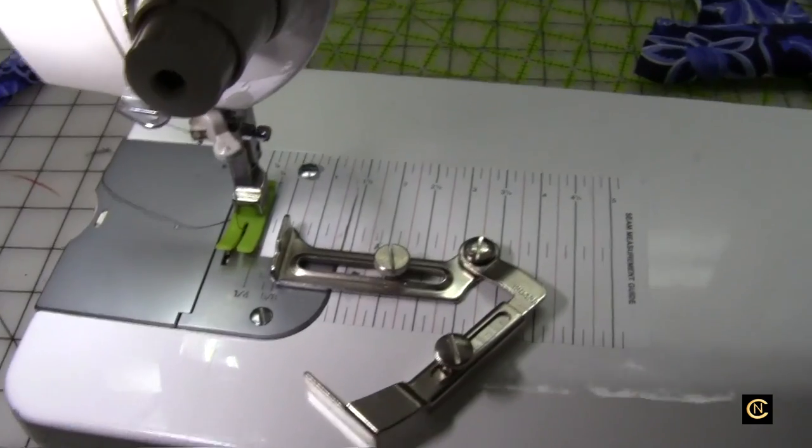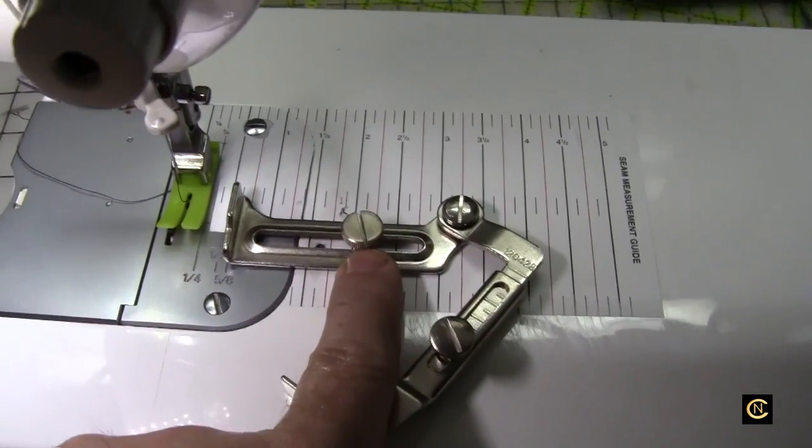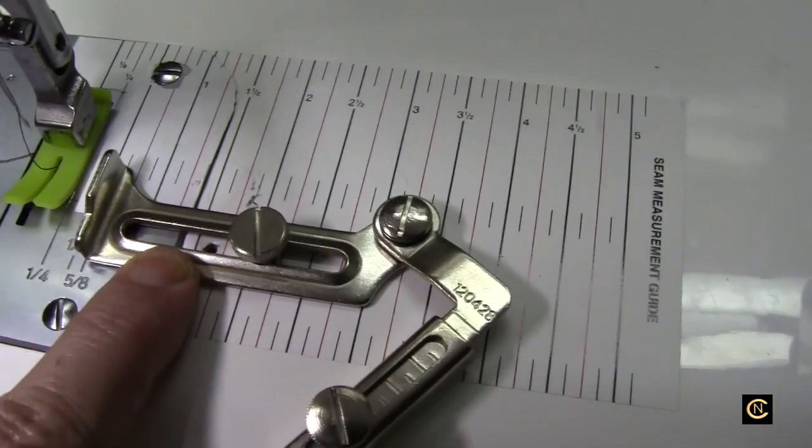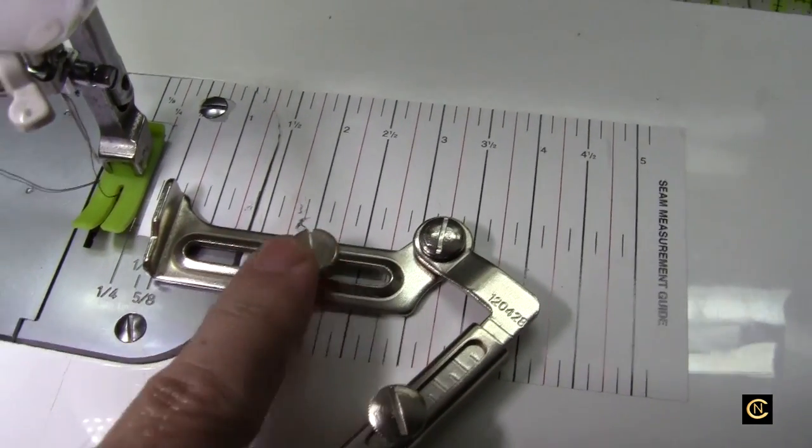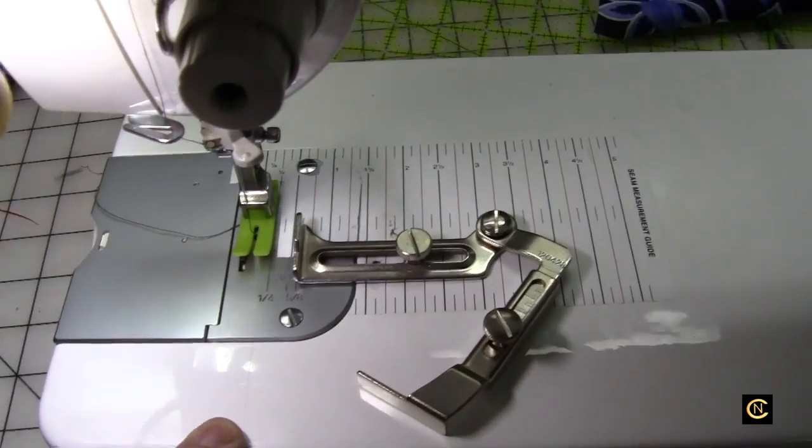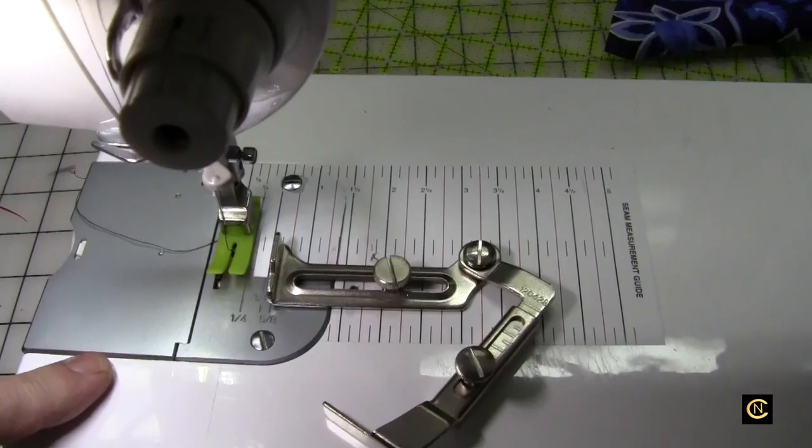So this one you can attach to the bed of the machine. This has two screw holes so you can put two screws on there and tighten it down so it doesn't go anywhere. What I like to do on mine though, the pattern that I use by Islander Sewing, for example...